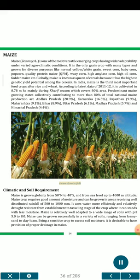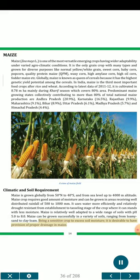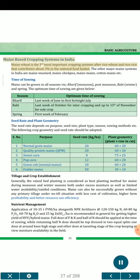Climatic and soil requirements: Maize is grown globally from 50°N to 40°S and from sea level up to 4000 meters altitude. Maize crop requires good moisture and can be grown in areas receiving well-distributed rainfall of 500 to 1000 mm. It uses water more efficiently and is relatively drought-resistant from establishment to tasseling stage. Maize is relatively well adapted to soils with pH 5.0 to 8.0, ranging from loamy sand to clay loam. Being a sensitive crop to excess soil moisture, provision of proper drainage in maize is desirable. Maize-wheat is the third most important cropping system after rice-wheat and rice-rice, contributing about 3% in the national food basket. Other major maize systems in India are maize-mustard, maize-chickpea, maize-maize, cotton-maize, etc.